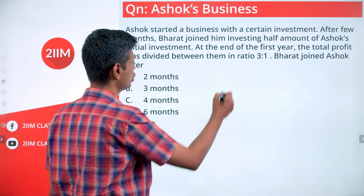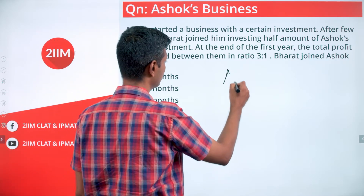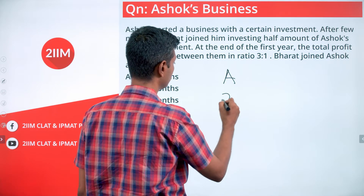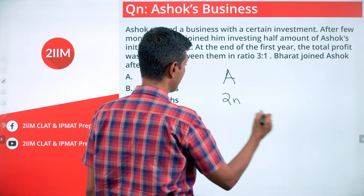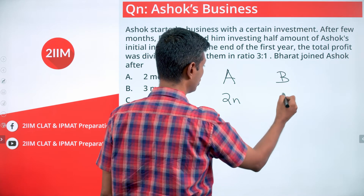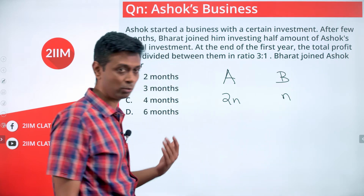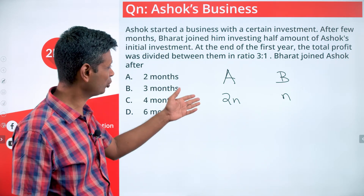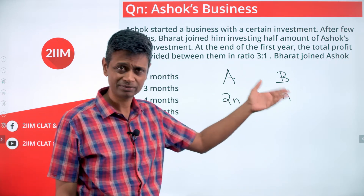Ashok invests 2N, and Bharat invests only N — half the amount. I've selected 2N and N because N is half of 2N.